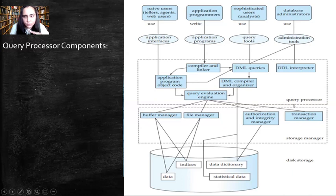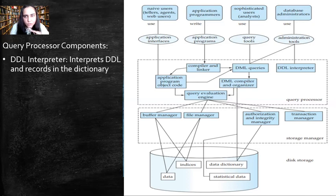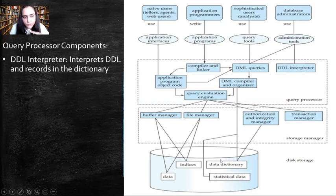Now we'll study the query processor components. The first is the DDL interpreter. It translates your data definition language commands and records them in the data dictionary. The data dictionary stores the schema of the database, and that schema or design is written using the DDL — the data definition language. Once that is decided, it gets stored in the data dictionary.